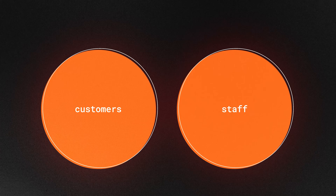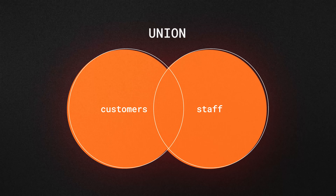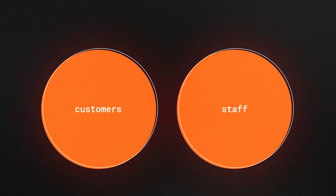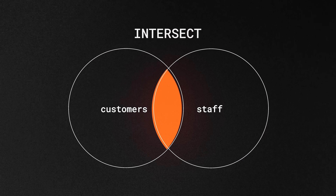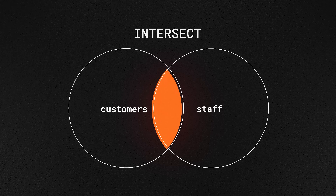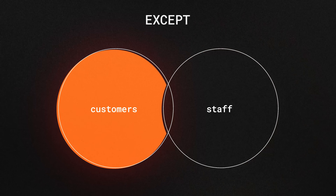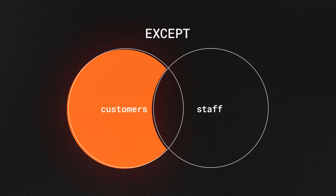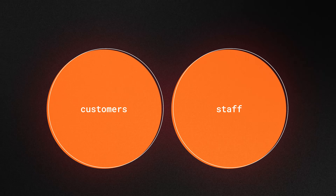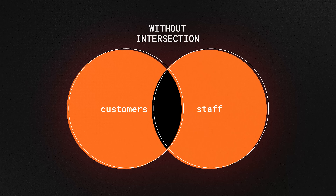The first thing we're going to do is look at the union between these two tables. Then we will look at the intersection between the two tables. And then we'll look at one table without any of the matches from the other table. And then we will look at a kind of weird case of the union between the two tables without the intersection.